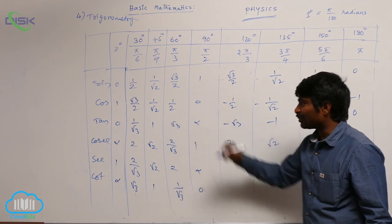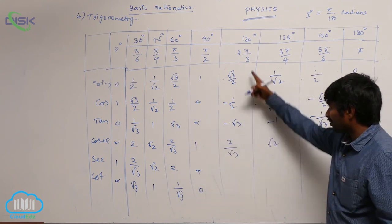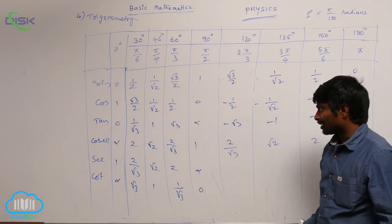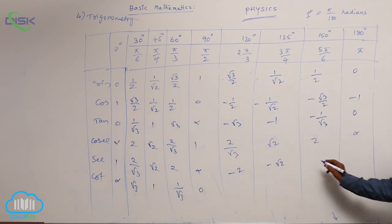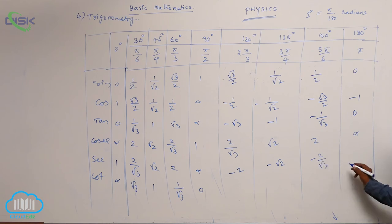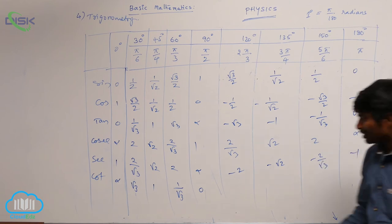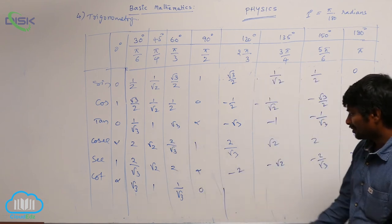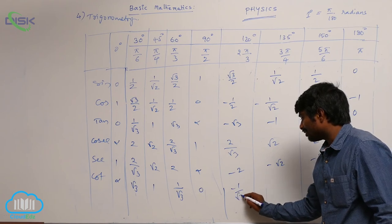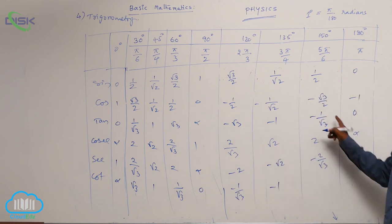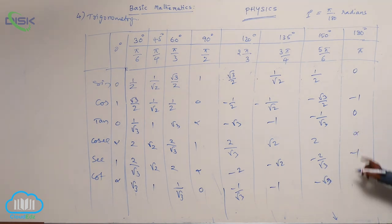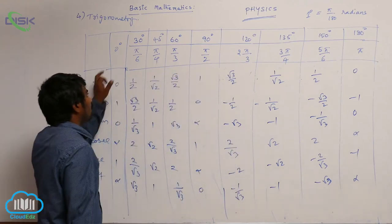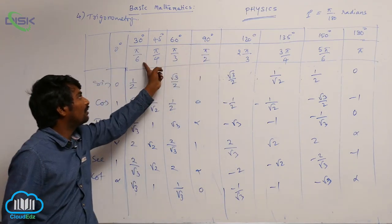Secant is reciprocal of cos, giving minus 2, minus root 2, minus 2 by root 3, and minus 1. Cotangent is reciprocal of tan, giving minus 1 by root 3, minus 1, minus root 3, and the last value is undefined. In this way we can write the trigonometric ratio values for any values in degrees or radians.